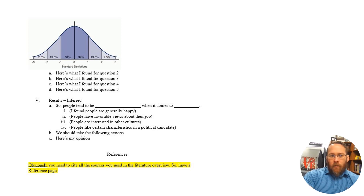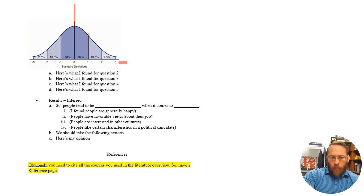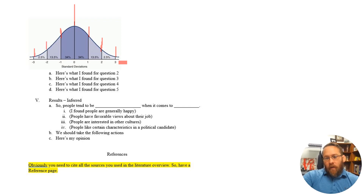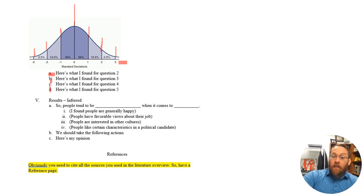For example, you might use a clip art bell curve from Google Images and label it. If the mean is 4 and the standard deviation is 0.3, then the labels would be 4, 4.3, 4.6, 4.9 going right, and 3.7, 3.4, 3.1 going left. Do this for all five questions — each needs mode, median, mean, standard deviation, and a labeled bell curve. If this isn't making sense, go back to chapters 11 and 12.